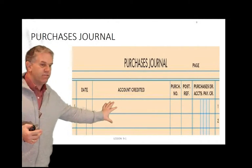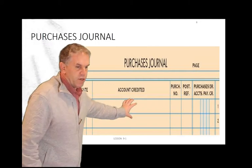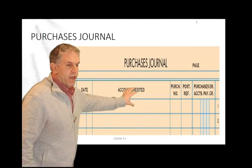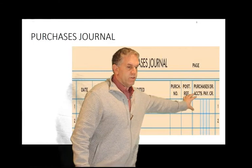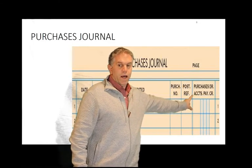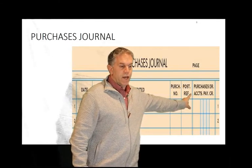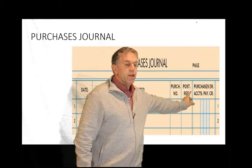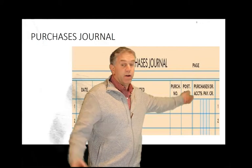A purchases journal is a very simplistic form — very easy. It has your date, your accounts credited, your purchase number, your post reference, and one column. Everything in that one column is a purchases debit and accounts payable credit. So everything we have here is going to be one number.